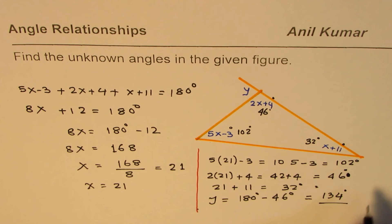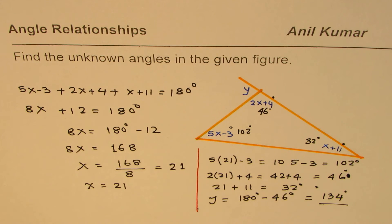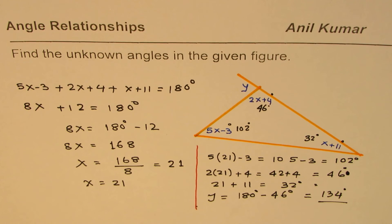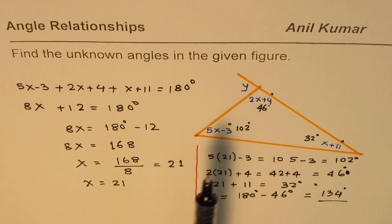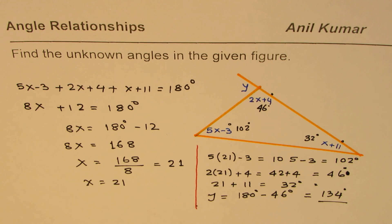So these are the angles for the given diagram, and I hope that helps. So these are the steps you should follow to find the angles in the given figure. Remember, sum of angles in a triangle is always 180 degrees, and external angle is equal to sum of the remote interior angles. That helps. Thank you, and all the best.